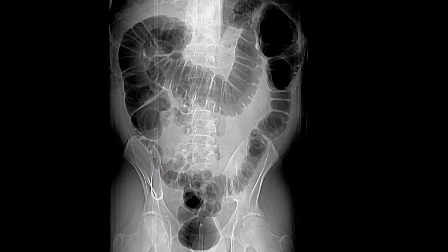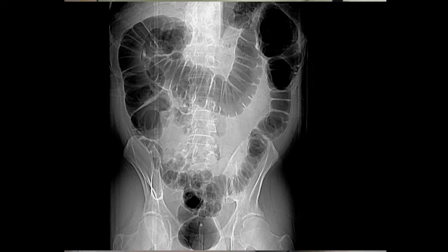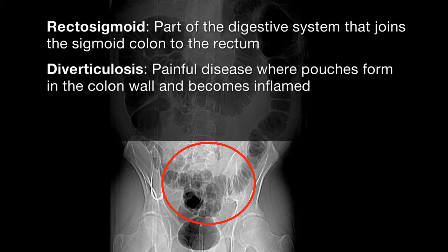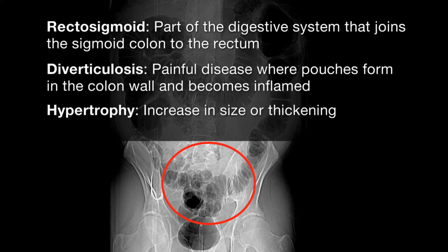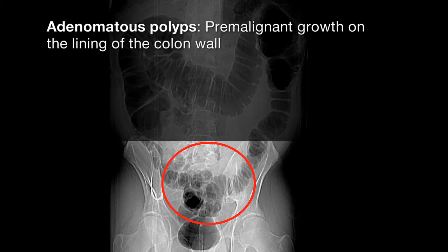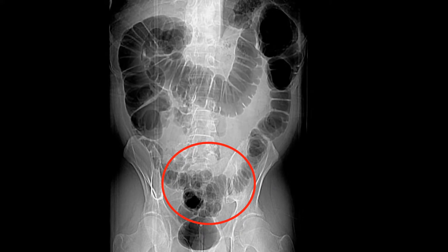What you want to see is excellent distension from the rectum all the way to the cecum, with only a little bit of reflux into the small bowel. We like for the techs to check this before they go ahead with scanning. The rectosigmoid is the area that will give you the most problems because of diverticulosis and muscular hypertrophy, and at the same time it has the highest incidence of adenomatous polyps and cancers. So you really have to focus on the rectosigmoid to assure that you have appropriate distension.